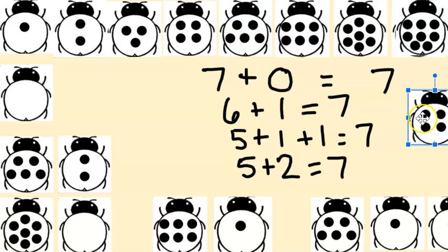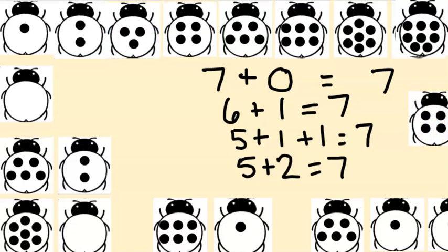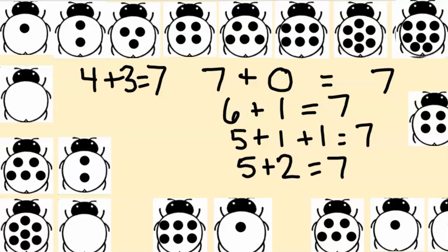How many dots does that one have? That's right, it has four. Four — how many more do I need to make seven? That's right, three. Four, five, six, seven. So if I want to write that as an equation: four plus three equals seven. That is correct! There are more combinations, aren't there boys and girls, especially using more than one number. Great job — you're going to get to practice making different combinations with the ladybugs!